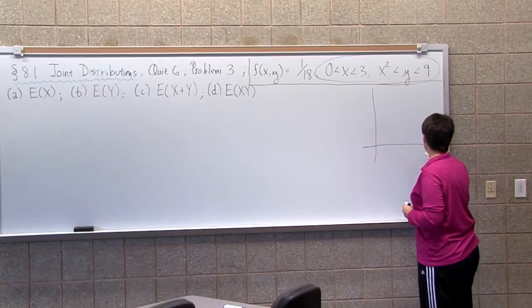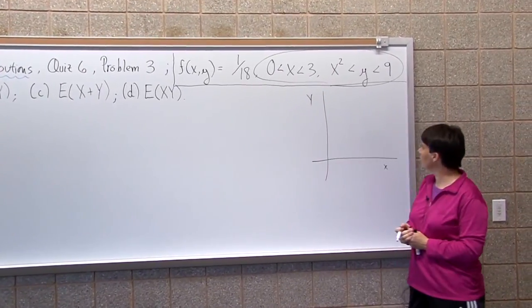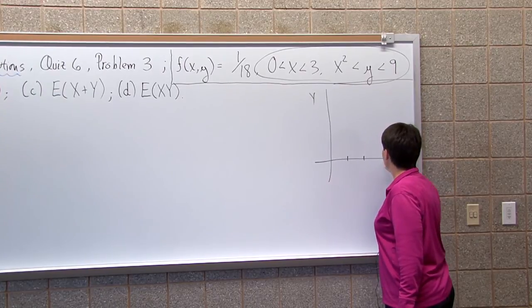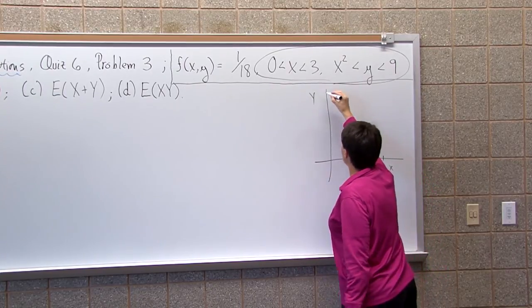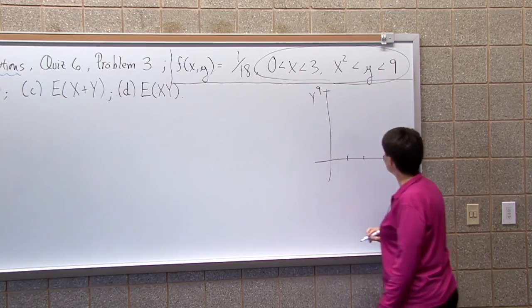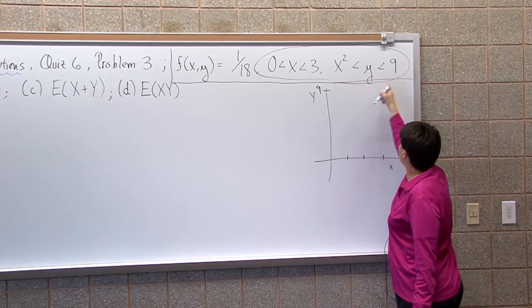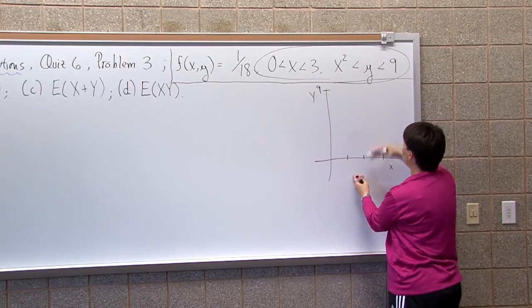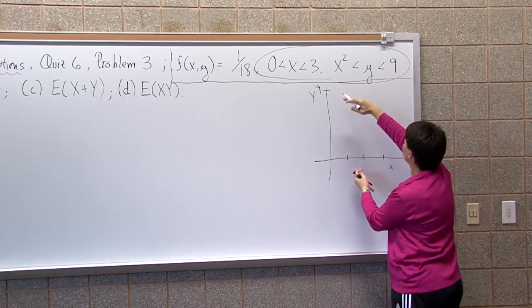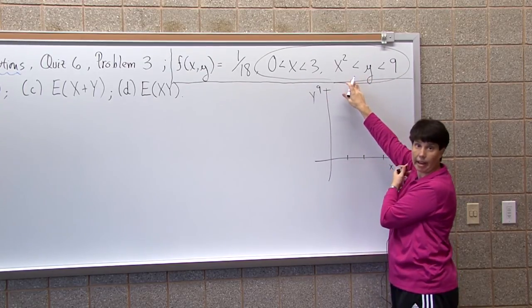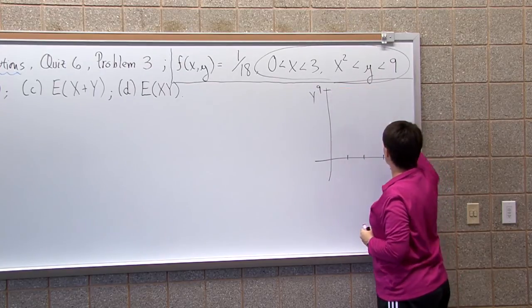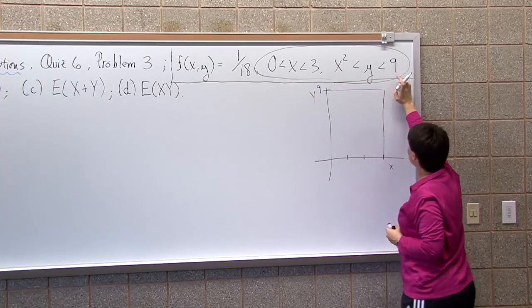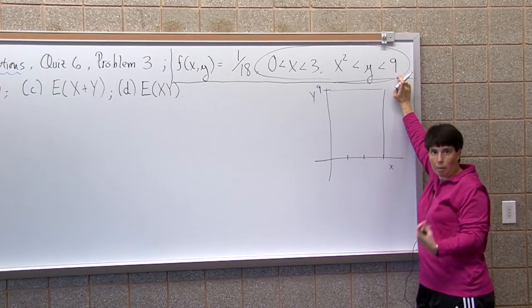This is my region of interest, and everything is going to be based on this picture. X's go from 0 to 3, here's my x's and here's my y's. 0, 1, 2, 3. This isn't going to be drawn to scale. Let's say this is 9 here. X is going from 0 to 3, so I know I'm in this box, and y's go from 0 to 9 because y's are bigger than x. I'm sitting somewhere in this box.